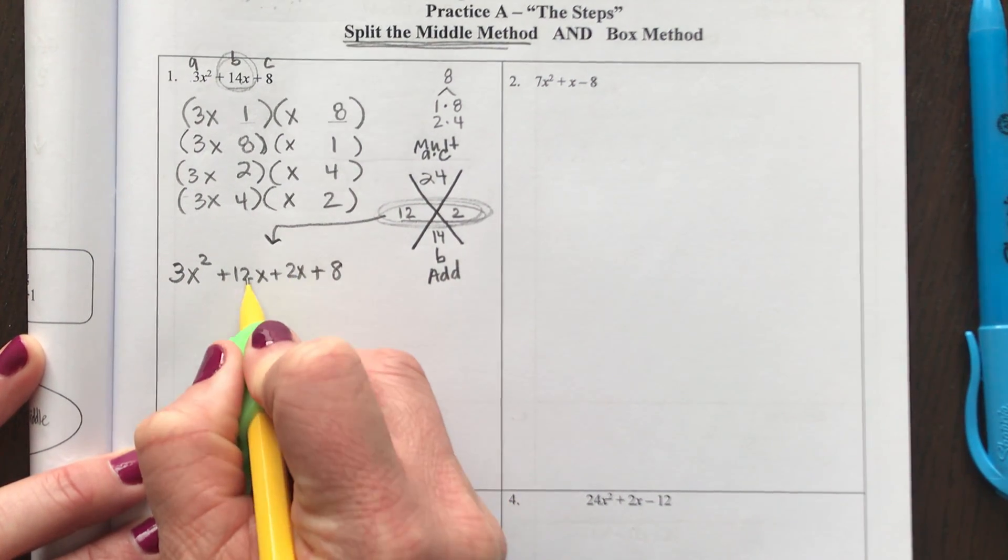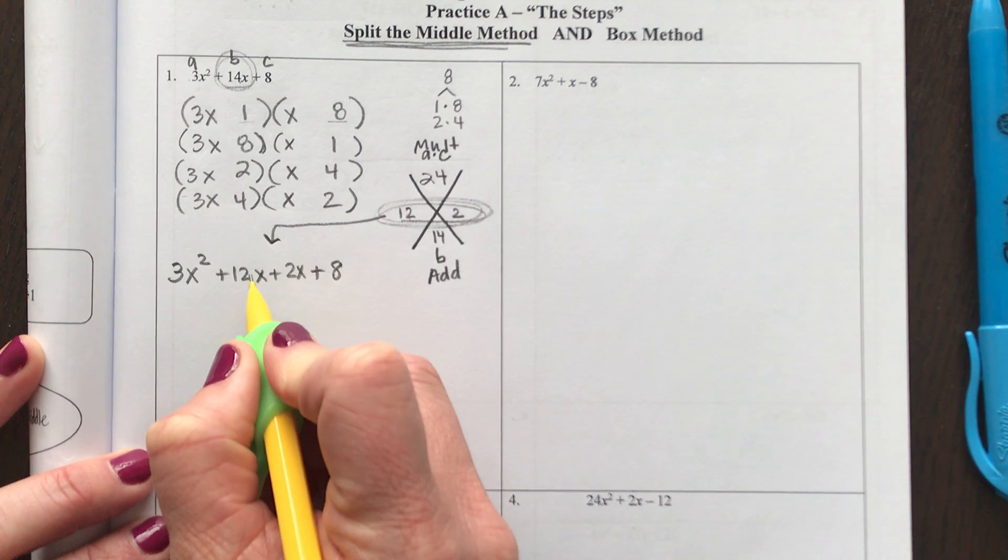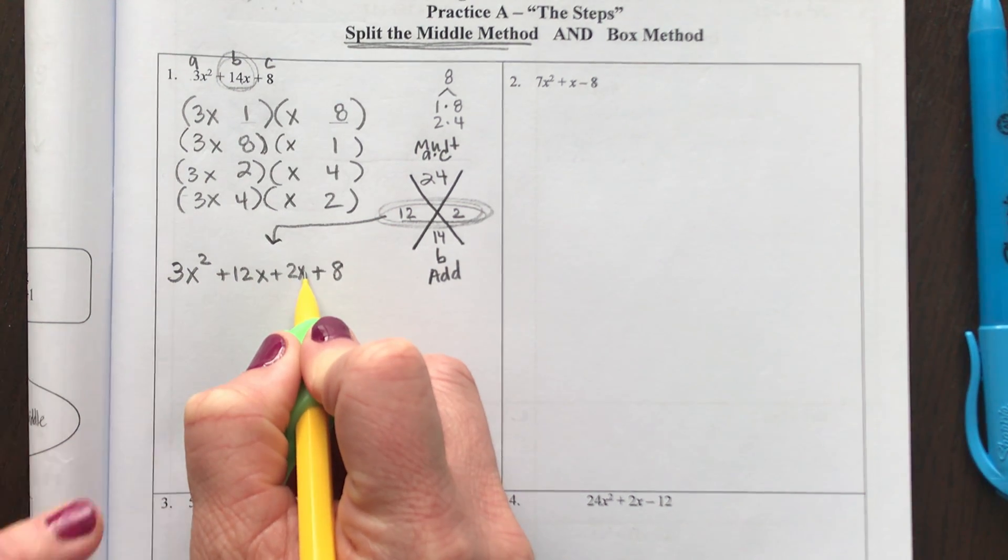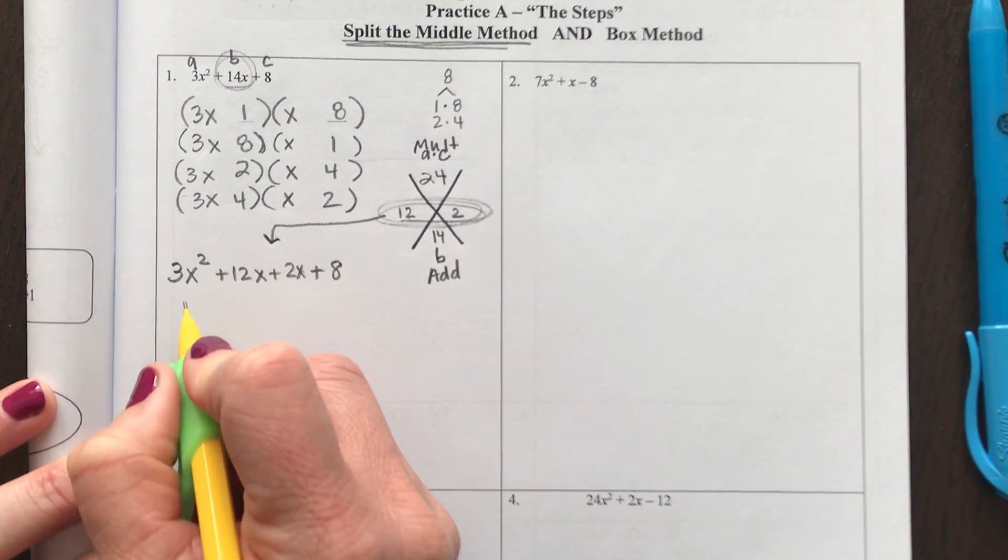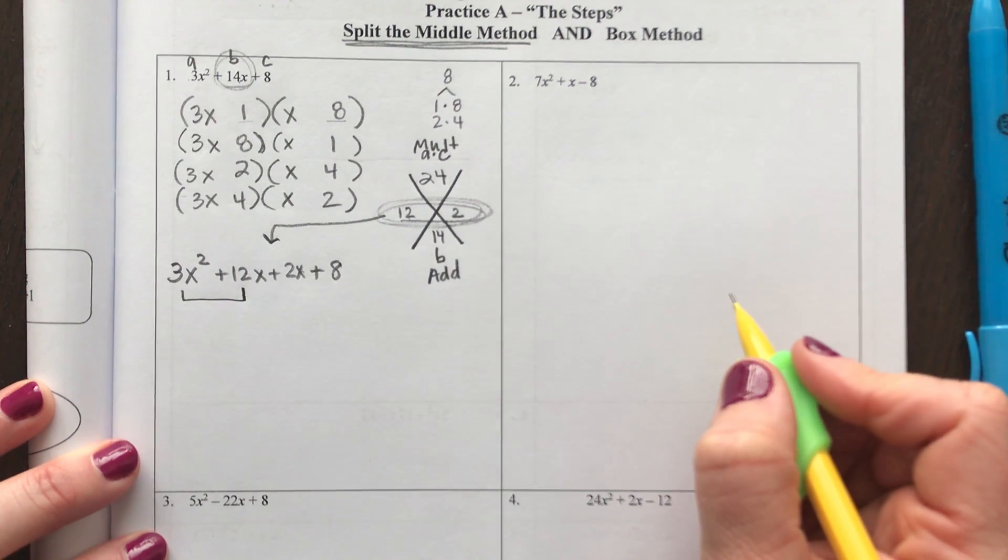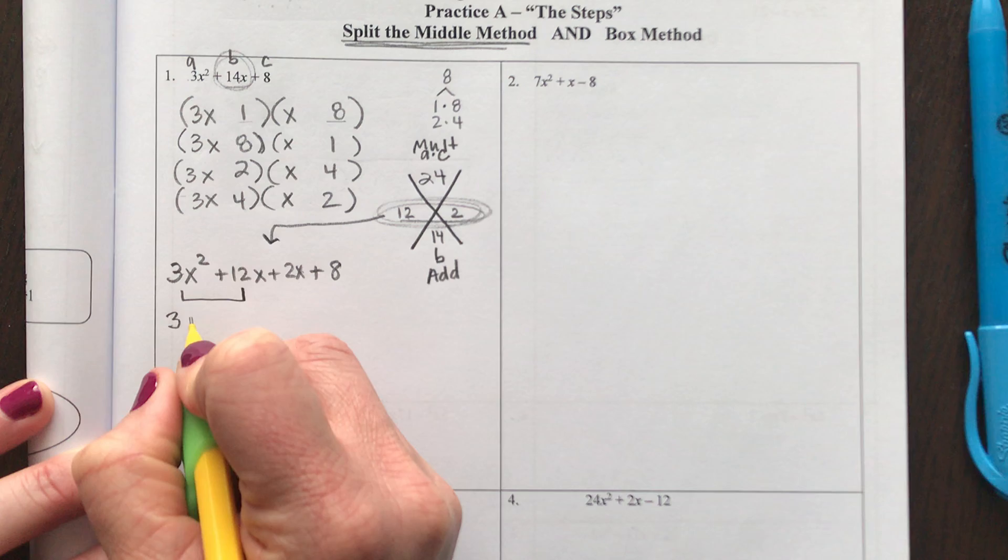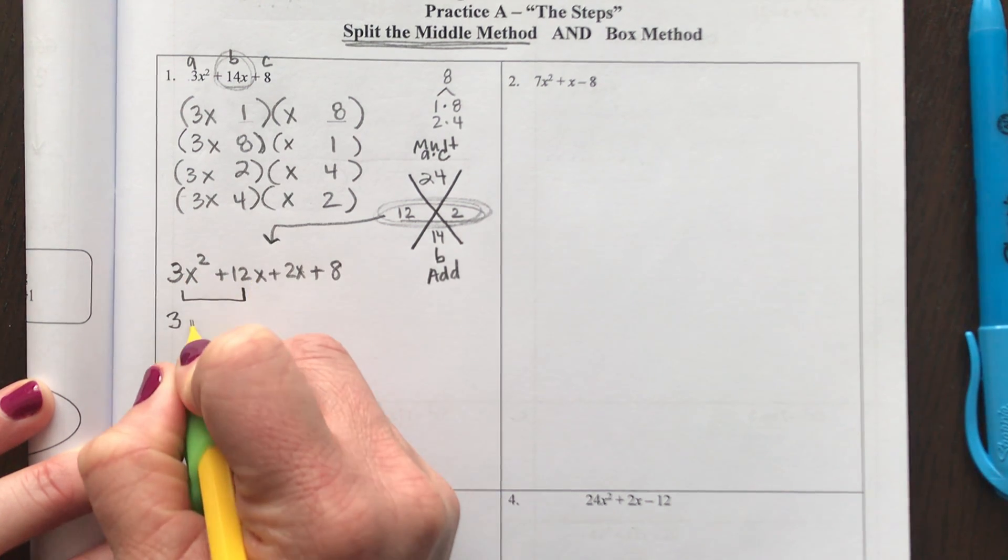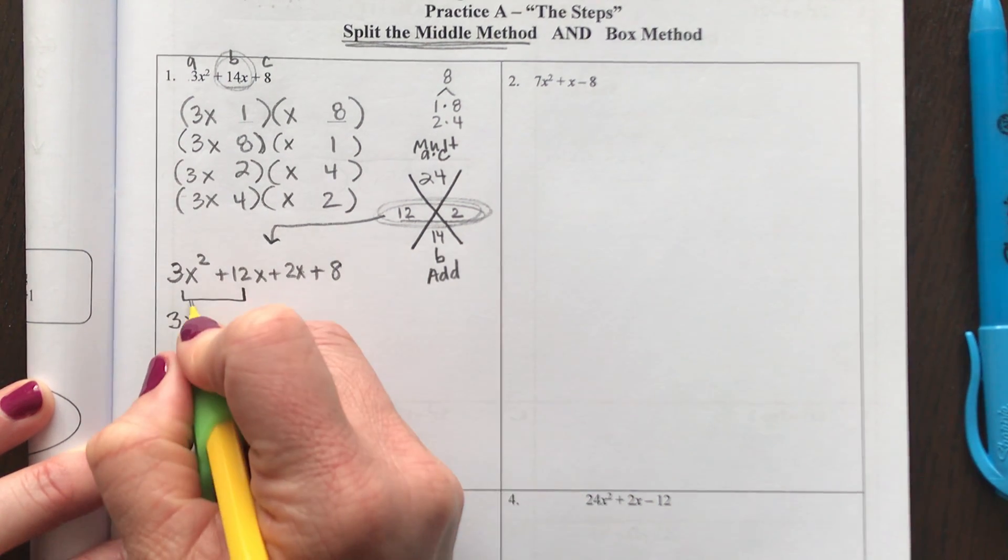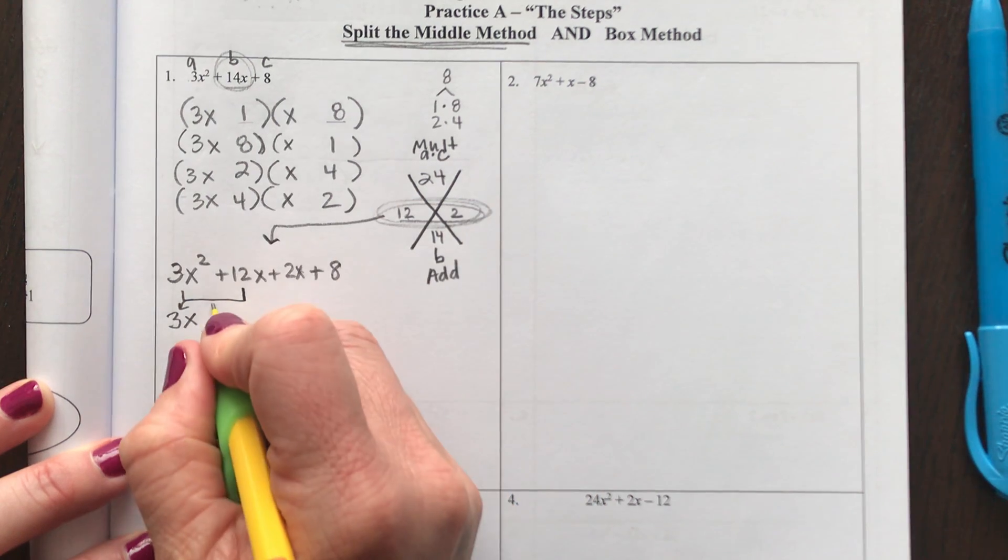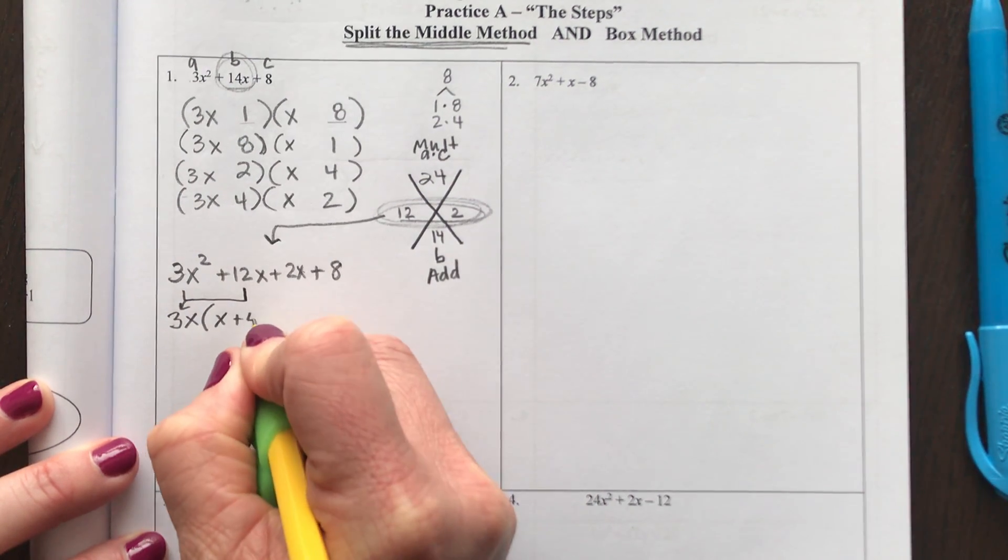The order of what you put these two in, like if you had done it in reverse 2x and 12x, it won't matter. You'll get the same answer. Now with grouping, you take the first two terms and you find what is called the GCF of just your first two terms. Both of these are divisible by 3 and I can take out an x from both of those and I'm left with x + 4.